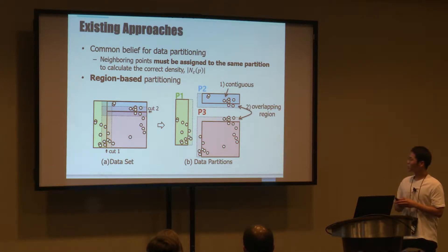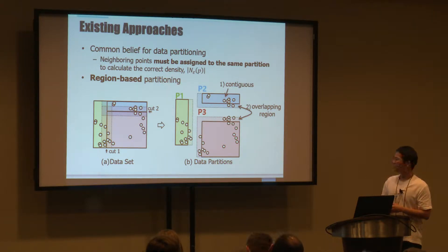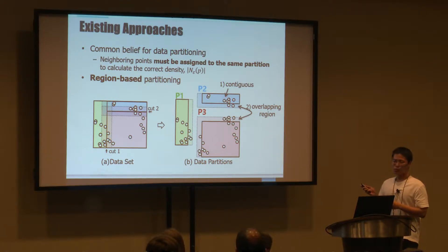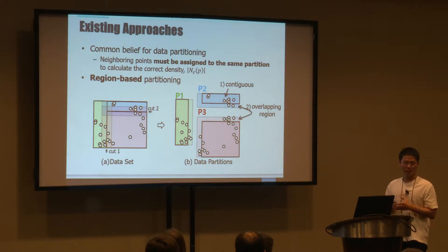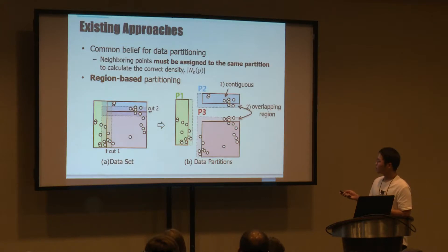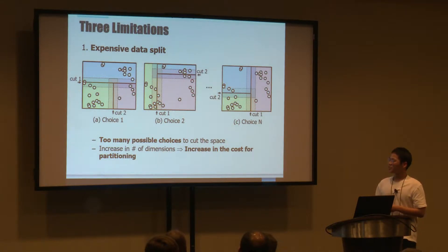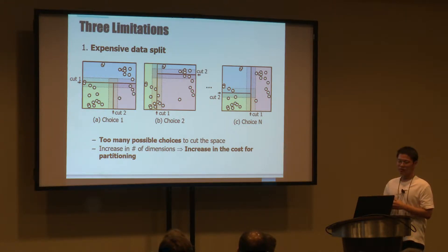The second characteristic is that most divided spaces must have overlapping regions, meaning all data points in overlapping regions must be duplicated into adjacent partitions. This is required for merging local results from each partition. There are three limitations: first, there are too many choices for cutting the data space, and the cost of partitioning increases as dimensionality increases — so region-based partitioning is very expensive.